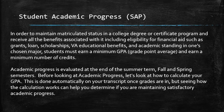In order to maintain matriculated status in a college degree or certificate program and receive all the benefits associated with it — including eligibility for financial aid such as grants, loans, scholarships, VA educational benefits, and academic standing, and once chosen major — students have to earn a minimum GPA and earn a minimum number of credits.